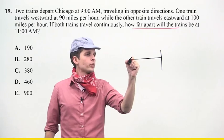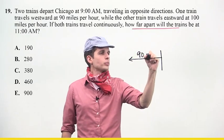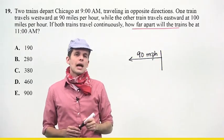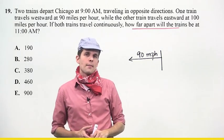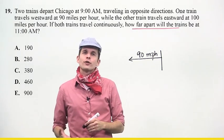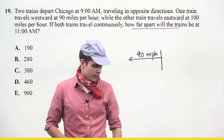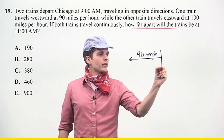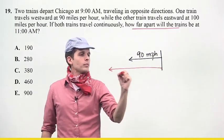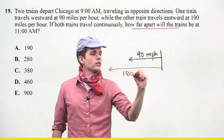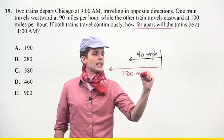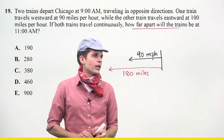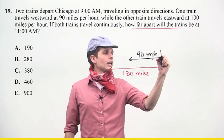I'm traveling westward at 90 miles per hour, starting at 9 a.m. After two hours, how far will I have traveled? Two hours at 90 miles per hour — that would be 180 miles. It's just 90 times two.